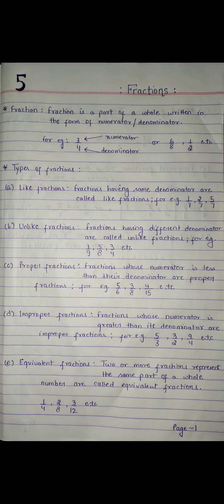Now moving further to Unlike Fractions. These are those Fractions which do not have same denominator. Their denominator is quite different from each other. Check out the example I have taken: 1 by 9, 5 by 8, 3 by 4. They all do have different kinds of denominators. So they are Unlike Fractions.